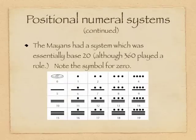The Mayans had a positional numeral system, base twenty, although three hundred and sixty played a role. Any positional numeral system, because the multiplier depends upon position, has to have a symbol for zero. Notice the symbol for zero in the Mayan numeral system.